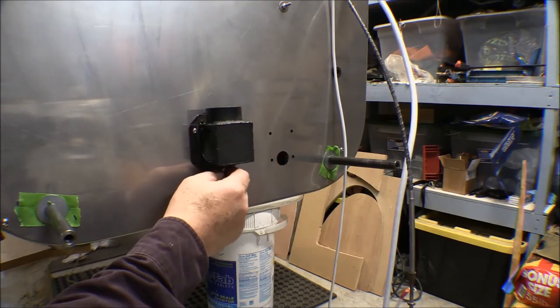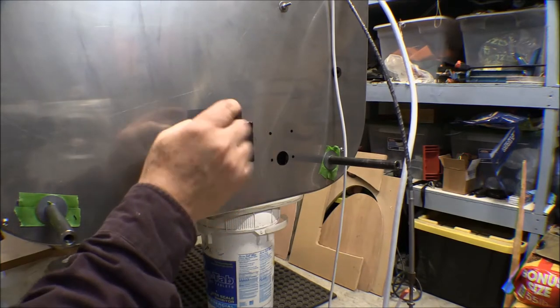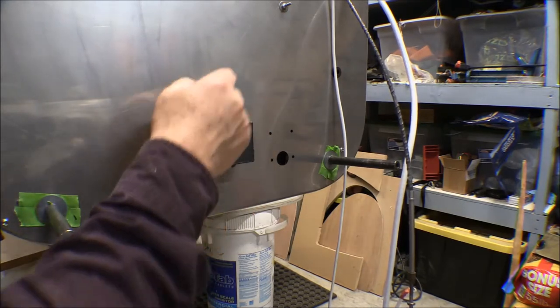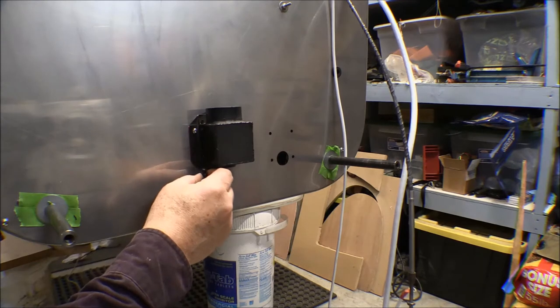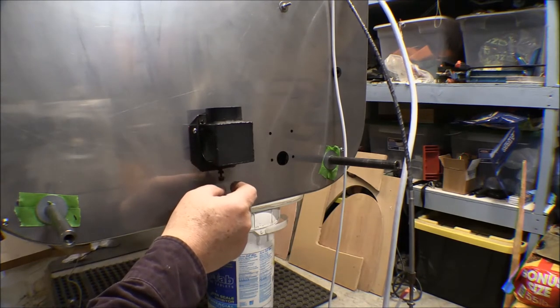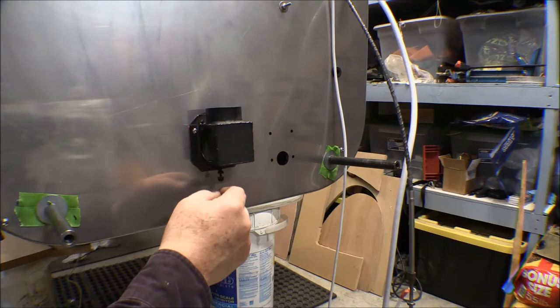This is the flapper. This opens up like this to allow air to go in to the cabin, the heated air, and it closes and that closes it off.